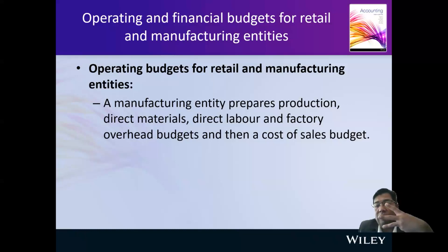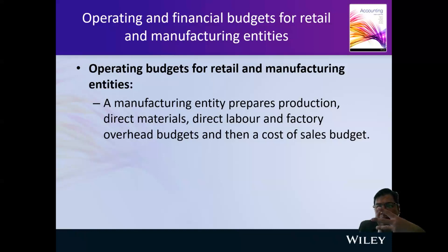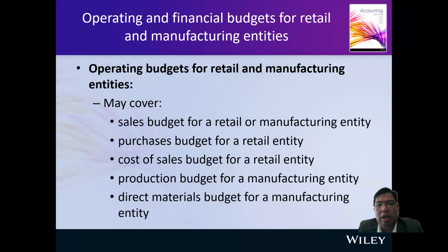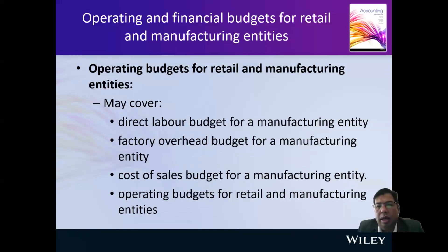We have three types of inventory for manufacturing: number one is finished goods, number two is work-in-progress (WIP), and number three is raw material. You must prepare a budget for all three types of inventory. This covers the sales budget, purchase budget, cost of sales budget, production budget, and direct material budget for manufacturing entities, plus the direct labor budget — how many hours are needed — and the factory overhead.